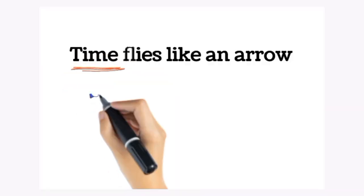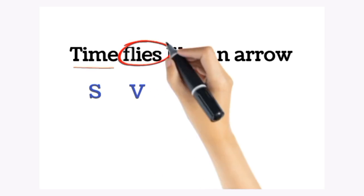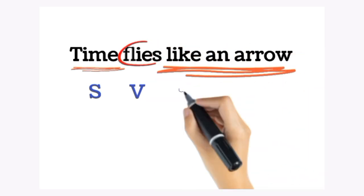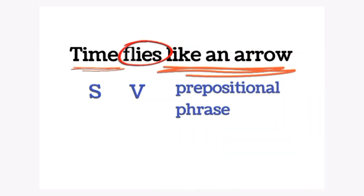Time is a subject, flies is a verb, and 'like an arrow' is a prepositional phrase modifying flies.